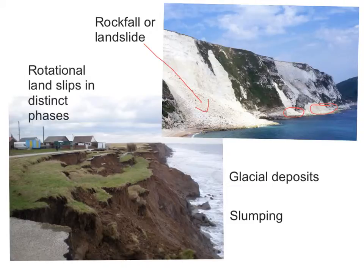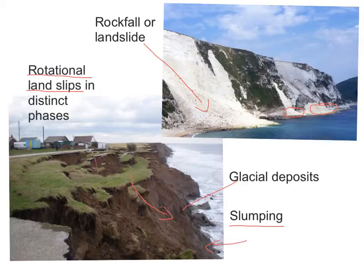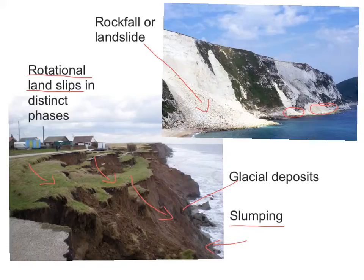In contrast, the bottom photograph shows slumping, which is a very slow mass movement. Usually when you have cliffs made up of glacial deposits — a very soft geology which can absorb rainwater, becoming very heavy — plus a bit of undercutting at the base of the cliff, this creates what we call rotational landslips. The cliff moves very slowly along a slip plane, rotating just like you would slump in your chair at school, moving down the cliff in stages, slowly slumping down and eventually becoming eroded away. So we have a slow mass movement at the bottom and a fast one at the top.